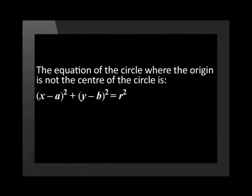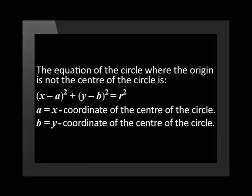Let's take a look at the standard formula for circles where the center is not the origin. We can use this to determine the radius and the center of the circle. The standard equation is: in brackets x minus a, squared, plus in brackets y minus b, squared, equals r squared. A represents the x-coordinate of the center and b represents the y-coordinate of the center. From the standard equation we can determine the coordinates of the center by looking at the values of a and b.